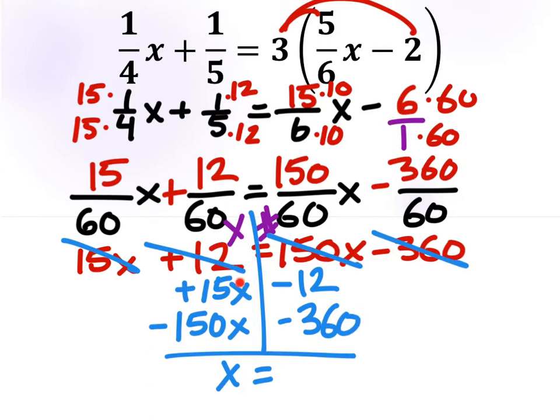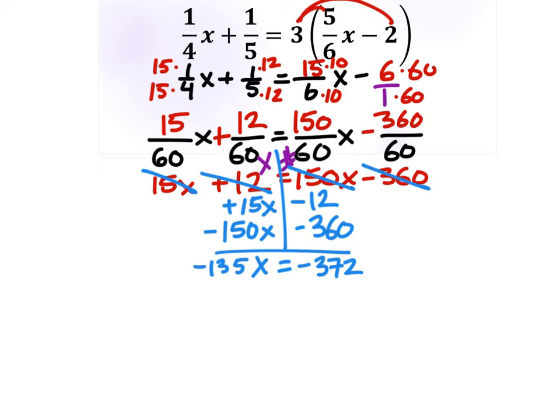Now, we'll add and subtract, so 15x minus 150x, that gives us a negative 135x. Negative 12 minus 360 is a negative 372. Now, I may be going through this a little fast. You may need to pause the video at times and do some of this on a calculator if you cannot do it in your head. And the final step in solving this equation is to divide both sides by a negative 135 in order to get that x by itself.